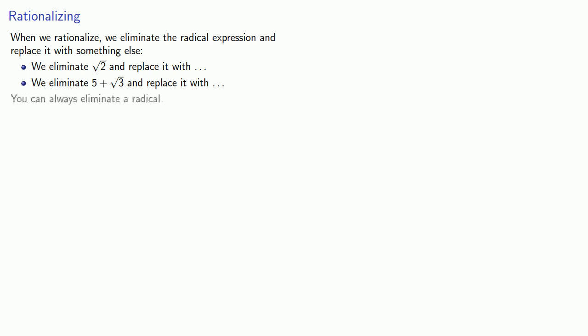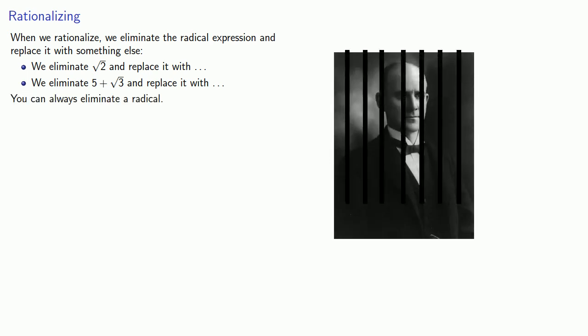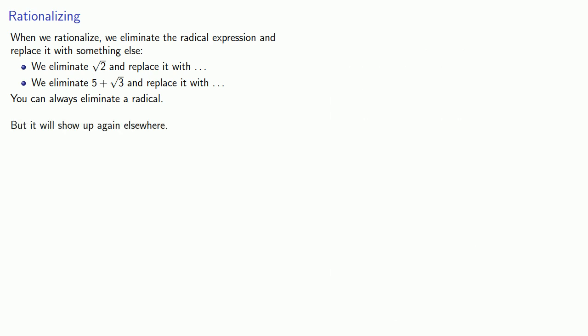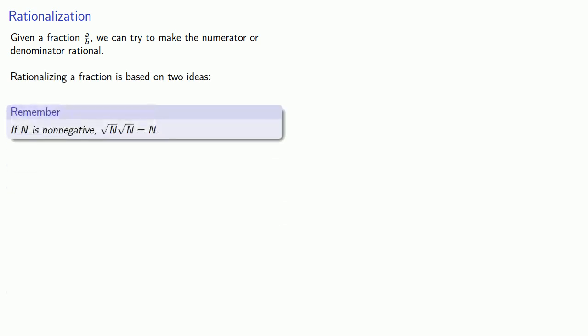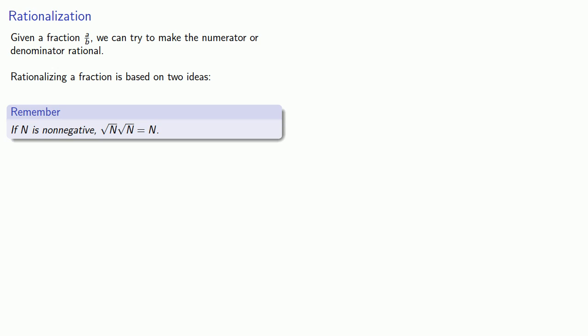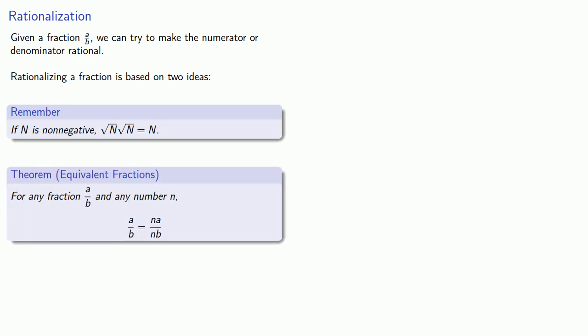Here's the important thing: you can always eliminate a radical, but it will show up again elsewhere. Given a fraction a over b, we can try to make the numerator or the denominator rational. Rationalizing a fraction is based on two ideas. First, if n is non-negative, the square root of n times the square root of n is just n. The other important idea is that for any fraction a over b and any number n, a over b equals n·a over n·b.